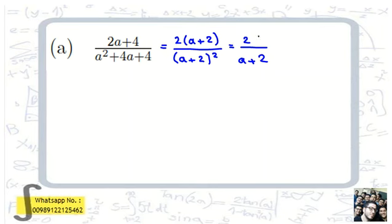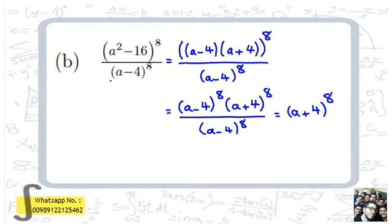Now let's do part b: (a squared minus 16) to the power of 8, all over (a minus 4) to the 8th. We know that a squared minus 16 is a difference of squares, so we can write it as (a minus 4) times (a plus 4).